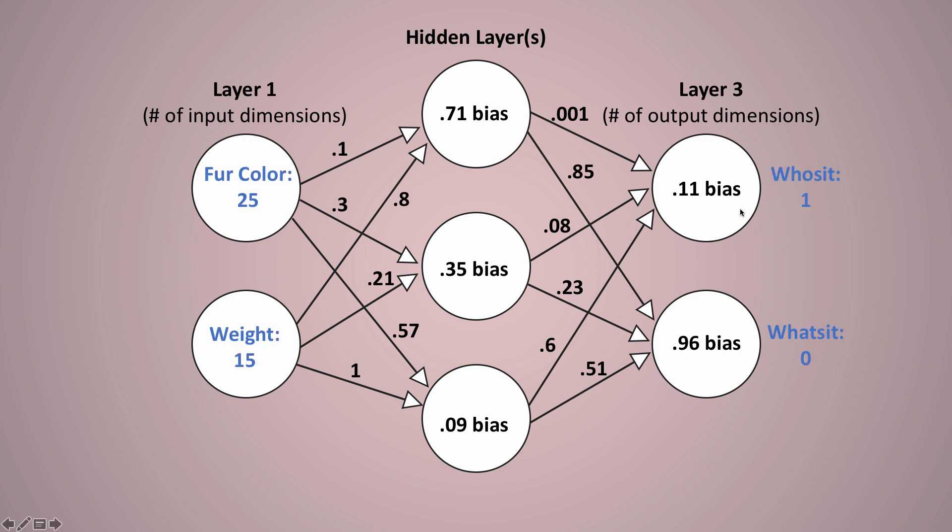And then moving on from there, we're going to start with the first entry in our data set. So entry number one, we have an animal fur color 25 and weight of 15. And it's a whoosit. It's a whoosit one, it's a whatsit zero. So now we start moving these input dimensions through the neural network. It's called a feed forward neural network for that reason. So basically what we're going to do is we're going to take both of the input dimensions. We're going to multiply them times the weight and then add the bias.